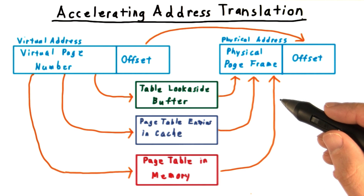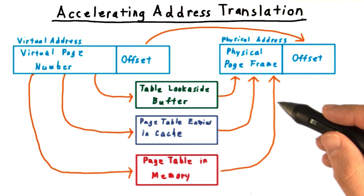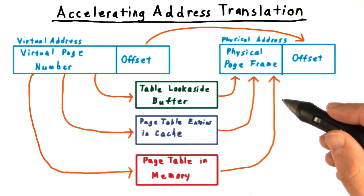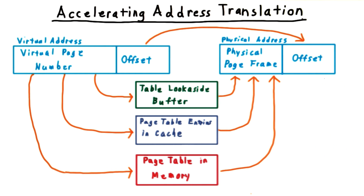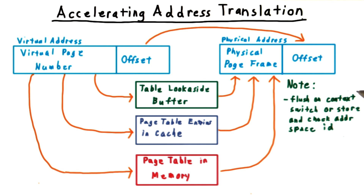This is extra tricky because one virtual page number may be mapped to a physical address in one process, but it might be invalid in another, or mapped to a different location. There are two ways to handle this problem. Some systems simply flush the TLB on every context switch — that is, every time the address space switches. This is a main reason that context switches are considered so costly.